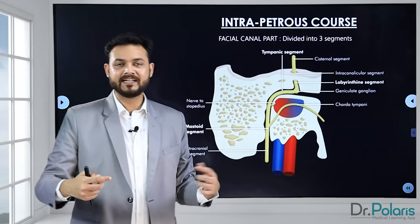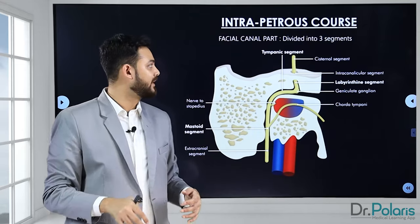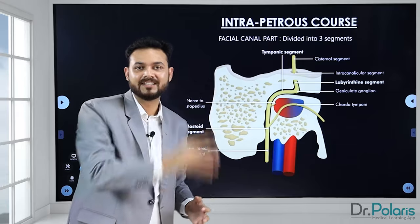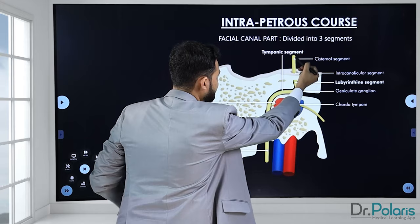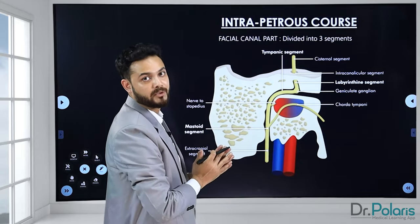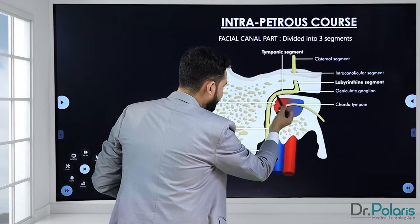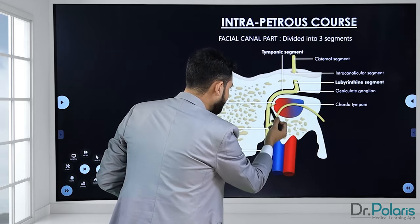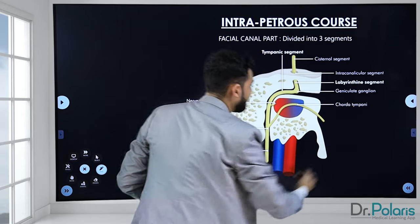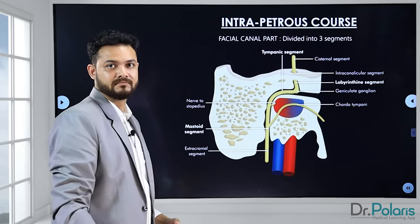The facial nerve has crossed the internal acoustic meatus, entered the petrous part of the temporal bone, and travels inside the facial canal. The facial canal is broken down into three major segments: the labyrinthine segment, the tympanic segment, and the mastoid segment. There is a relay point called the geniculate ganglion, then the first genu turn, then the second genu. The first nerve given off is the nerve to stapedius, then the chorda tympani exits, carrying taste sensation fibers, before the mastoid segment ends at the stylomastoid foramen.